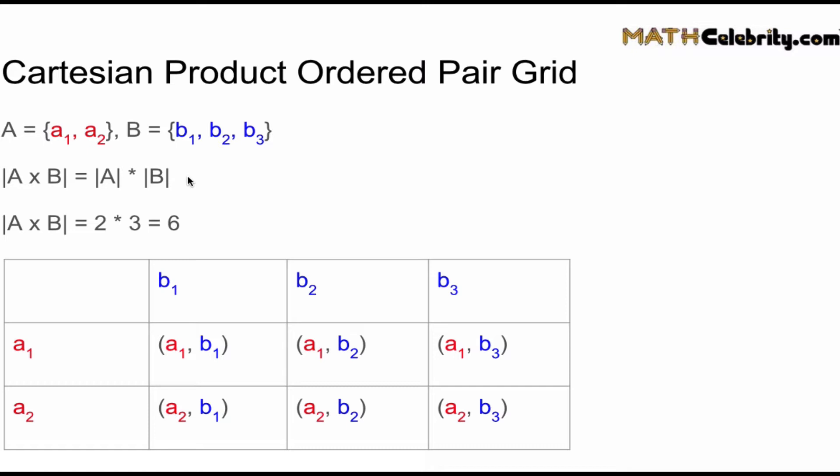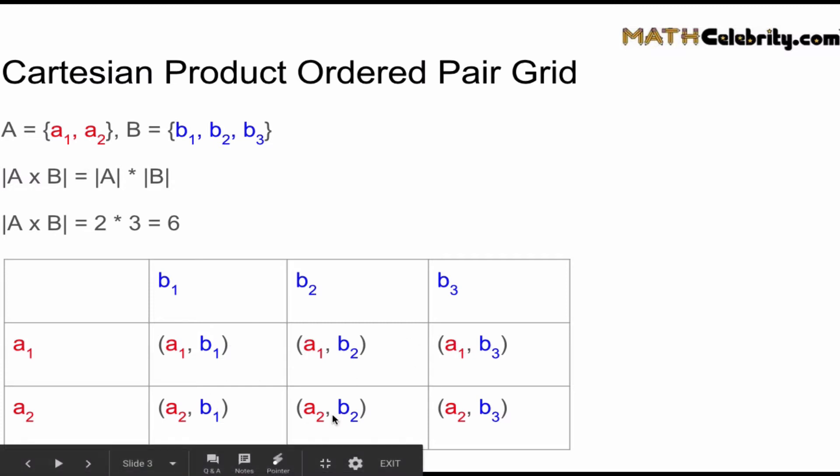I've set up set A in red, set B in blue, so you can see each unique ordered pair combination. If you count them up, we've got one, two, three, four, five, six.